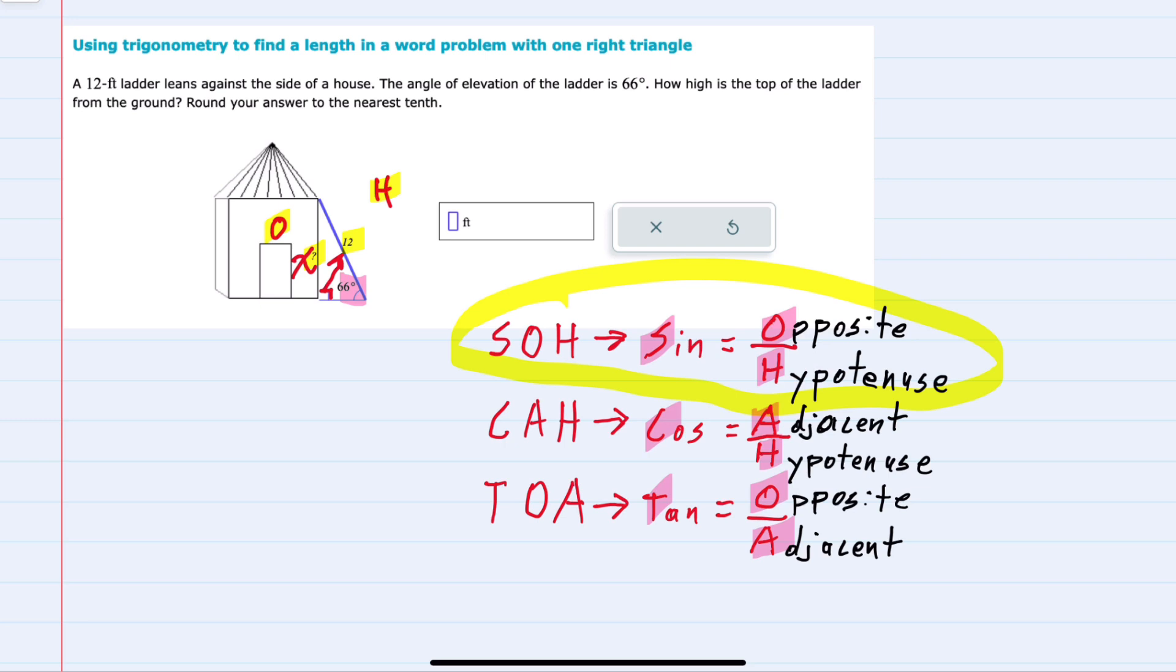And I can write that equation from the perspective of the 66 degrees. To say that sine of 66 degrees is equal to the opposite, that's the side that I'm looking for, so I'll just call that x over the hypotenuse, which I do know that's my 12.